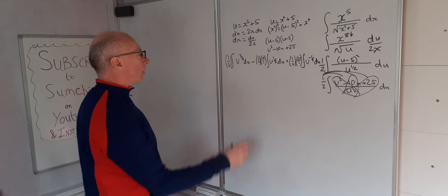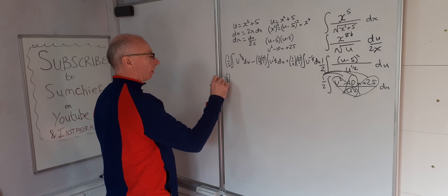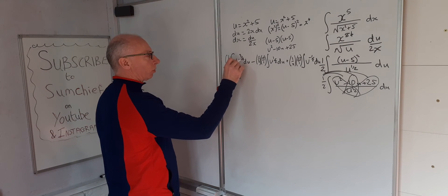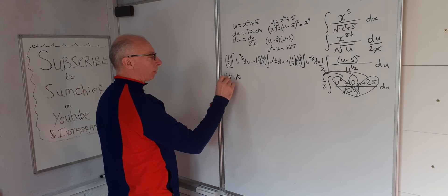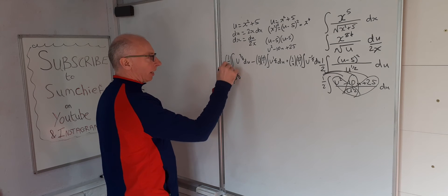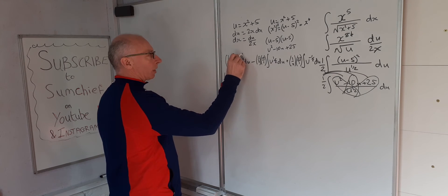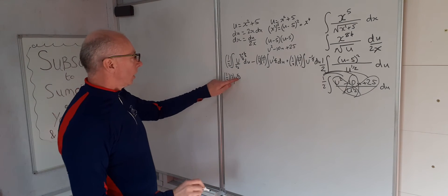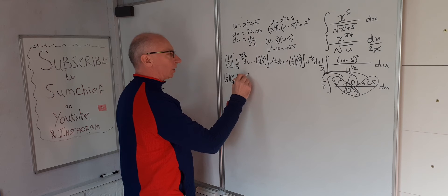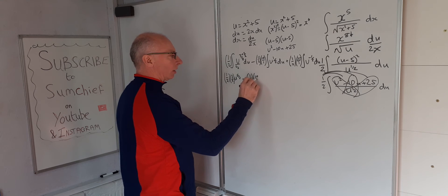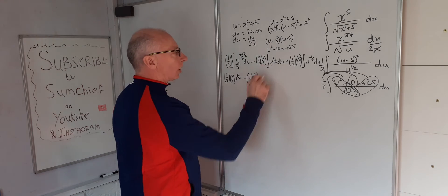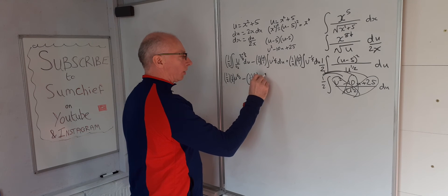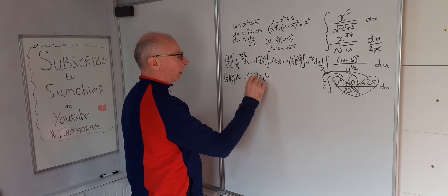Now we integrate each term using the power rule. For the first: one half times u to the three over two — adding 1 gives the power five over two, then multiplying by the reciprocal two over five. For the second: minus one half times ten times u to the half — adding 1 gives three over two, so we multiply by the reciprocal two thirds.